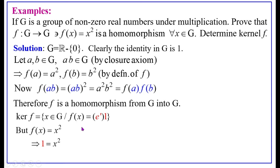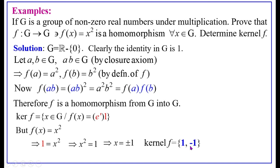But F(X) equals X squared, so X squared equals 1. This is a quadratic equation, giving X equals ±1. Here +1 is a positive real number and -1 is a negative real number. Hence the kernel of F consists of all elements of G mapped into 1, which are +1 and -1. Therefore ker(F) equals {1, -1}.